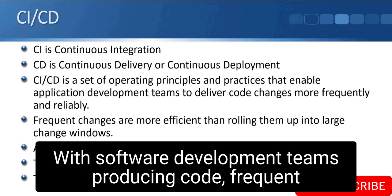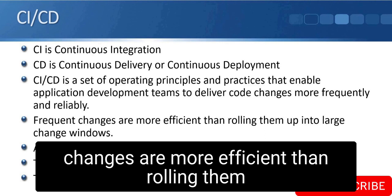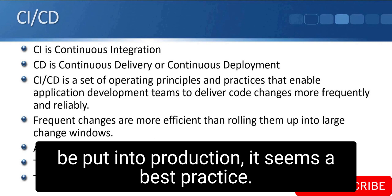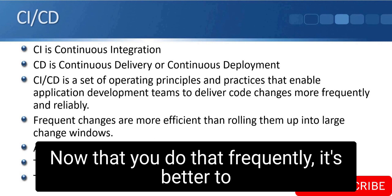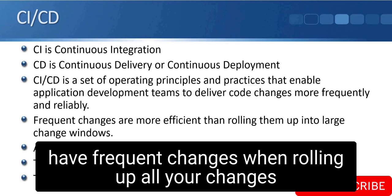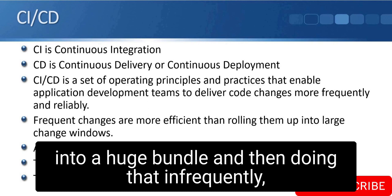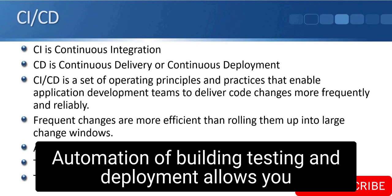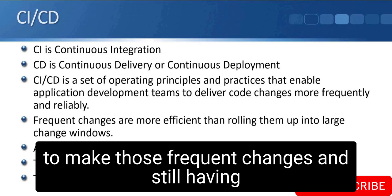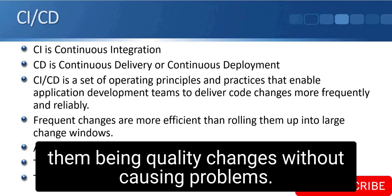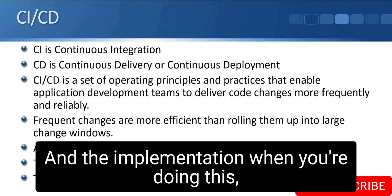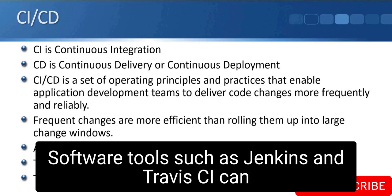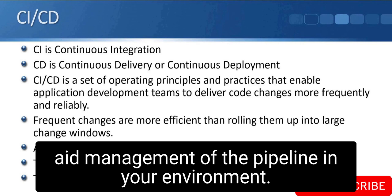With software development teams, frequent changes are more efficient than rolling everything up into large change windows. It's considered best practice to deploy code to production frequently rather than bundling all changes into one large infrequent release. Automation of building, testing, and deployment allows you to make those frequent changes while still maintaining quality. This implementation is known as the CI/CD pipeline, and software tools such as Jenkins and Travis CI can aid in managing the pipeline.